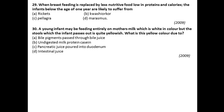Question twenty-nine: When breastfeeding is replaced by less nutritional food low in proteins and calories, infants below the age of one year are likely to suffer from? Rickets — not correct. Pellagra — also not correct. Kwashiorkor — not correct. Marasmus — yes, marasmus is the answer for this question.